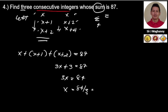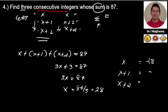Therefore x equals 28. Since we need three consecutive integers, our answers are x equals 28, x plus 1 equals 29, and x plus 2 equals 30. So the three consecutive integers are 28, 29, and 30. For review: for three consecutive integers, the first is x, the second is x plus 1, and the third is x plus 2.